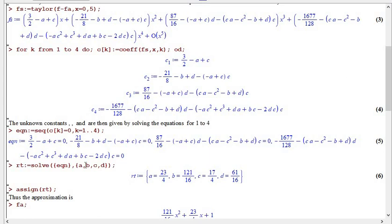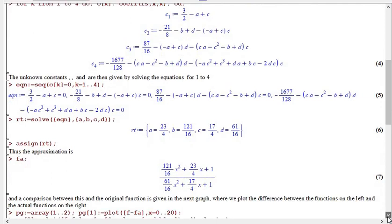So after solving, you have the value for A, B, C, D. Then you assign this value with this command. You assign this value to F and FA. And when you assign to FA, which is the approximating function, when you assign to FA, you have this.